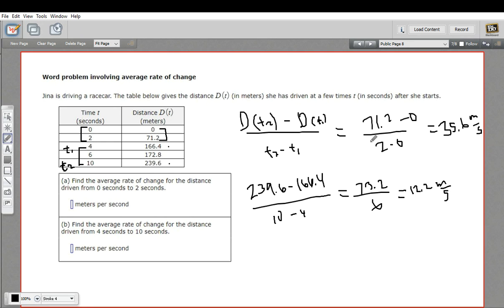So one of the things you can see from the data is that the acceleration between zero and two seconds is really fast, so the rate of change is 35.6 meters per second. But once she's driven for a while, that rate of change starts to slow down. So if you're going to graph it, it would look like this at the beginning and then more like that. So that is a word problem involving rate of change.